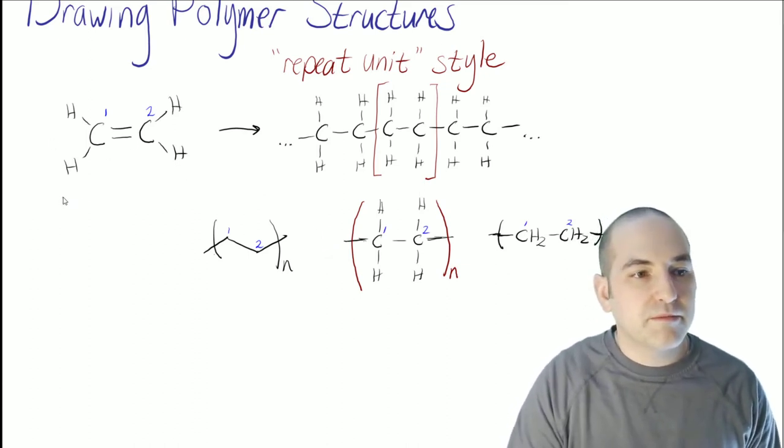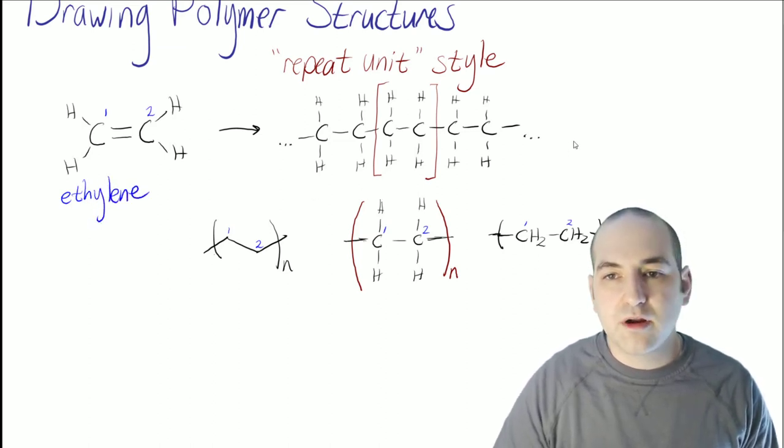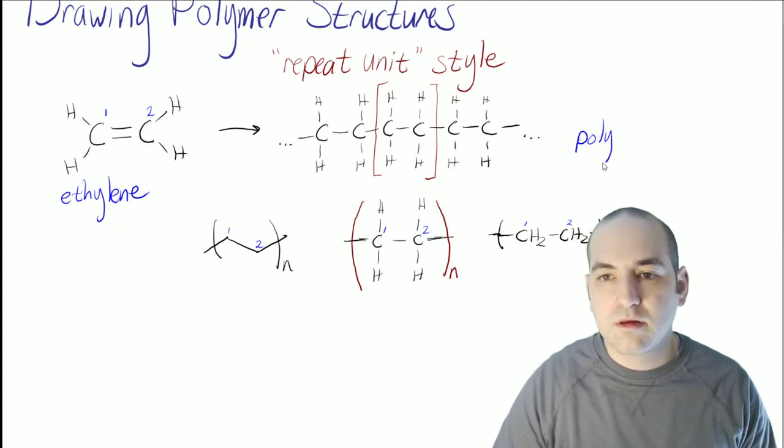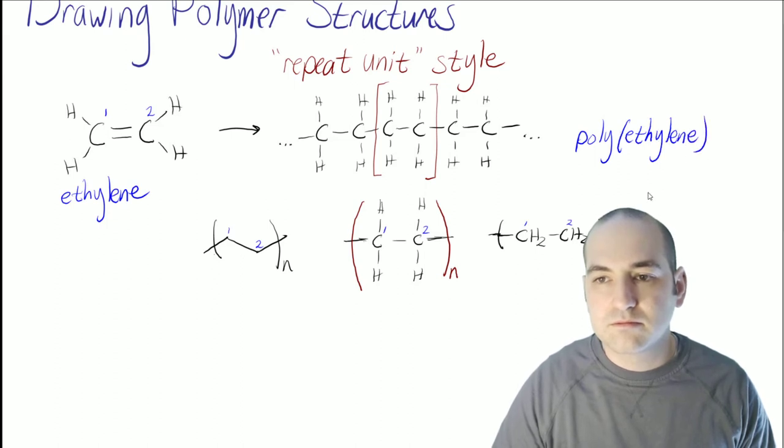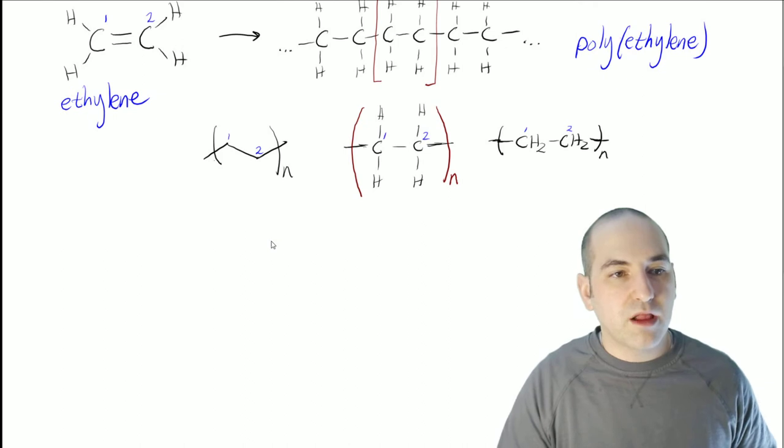So this monomer, by the way, is called ethylene, which makes this polymer polyethylene. And then we're going to look at a couple other polymers as well.